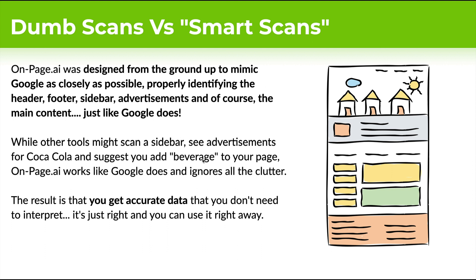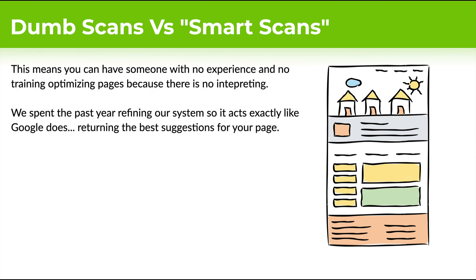While other tools might see an advertisement for Coca-Cola on the sidebar and say you need to add the word 'beverage,' or look at the footer links and say you need all those footer links too — what we're doing is looking at the page like Google does. OnPage.ai ignores all the clutter and delivers accurate data that you don't need to interpret. It's just right and you can use it right away. You can use the data and optimize immediately, or even hire someone who doesn't know SEO to just follow the instructions.